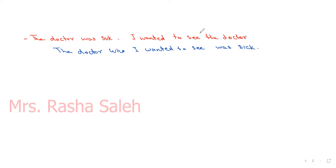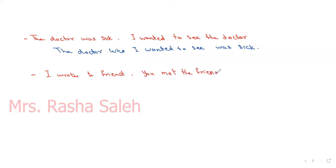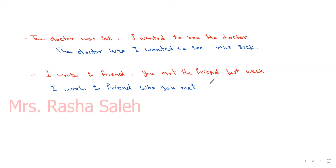Another example: 'I wrote to a friend.' and 'You met the friend last week.' If I want to use 'who', the result is: 'I wrote to a friend who you met last week.' Here we remove 'the friend' from the second sentence because we use 'who' instead.